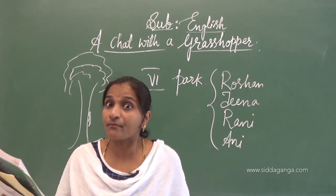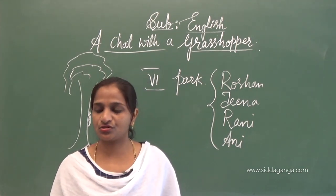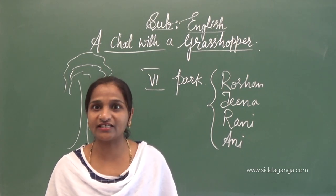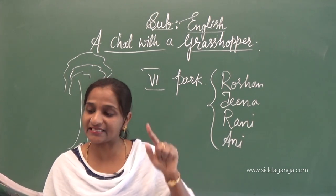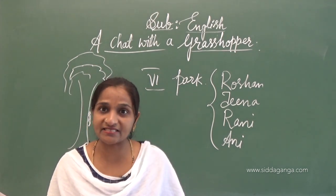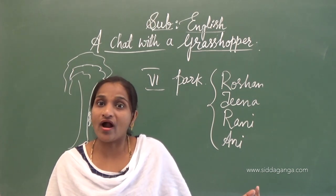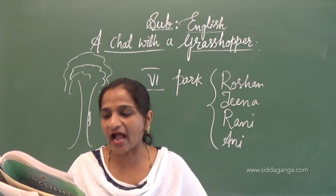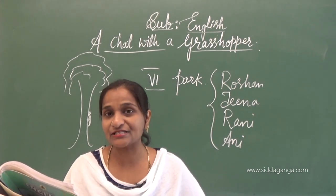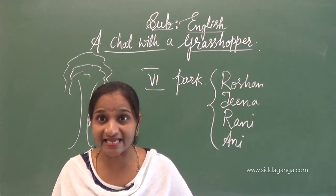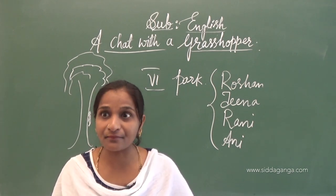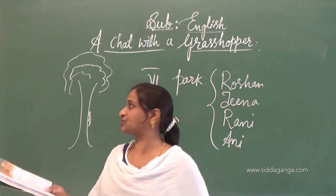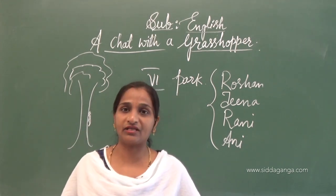Raju, looking at the insect, exclaims — Wow! What a beautiful insect. There is an exclamatory mark there — an exclamatory sentence — he is suddenly expressing his thought. Then Ramya replies. May I know your name please? Looking at that insect, Ramya is asking the insect: What is your name? May I know your name? Please — she is requesting the grasshopper to tell its name.